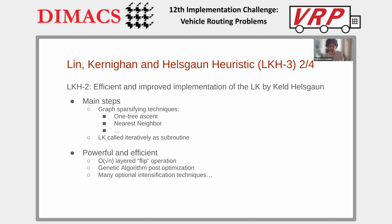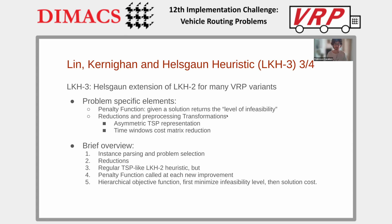LKH3, the one from which we started, is an extension of LKH2 for many VRP variants. Its main ingredient is the penalty function, which in a simple and localized function represents all the complexity of the VRP constraints. In practice, the penalty function receives the current solution and returns the level of infeasibility of that solution.